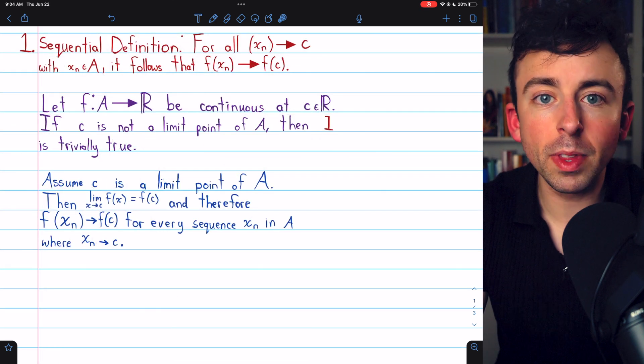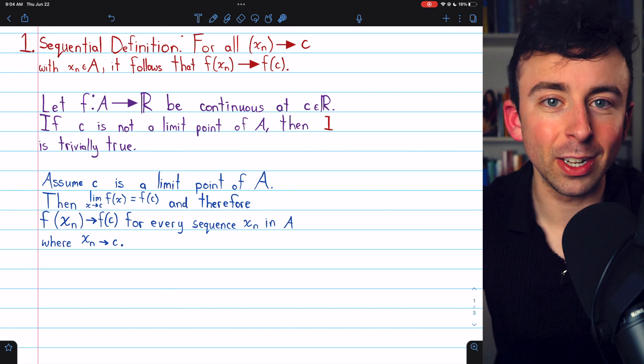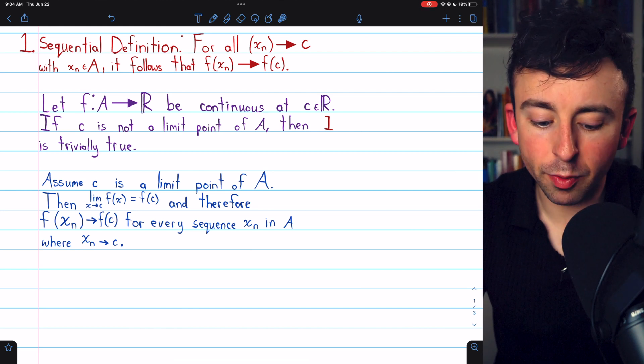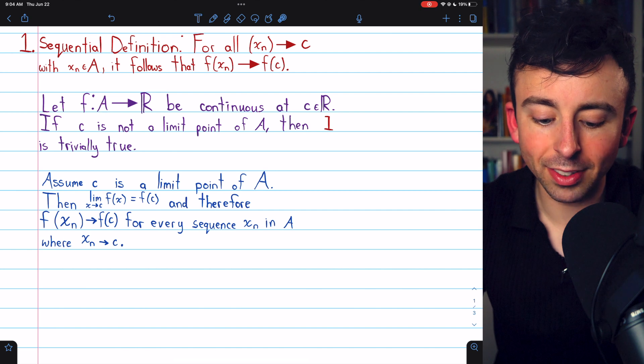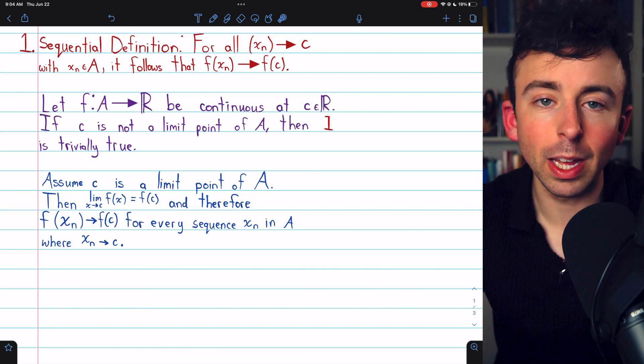First, we will assume that our function is continuous and prove what we could call property 1 here about the sequences. So, let's let f be a function from some subset of the reals A to the reals, and we'll let it be continuous at this real number c.